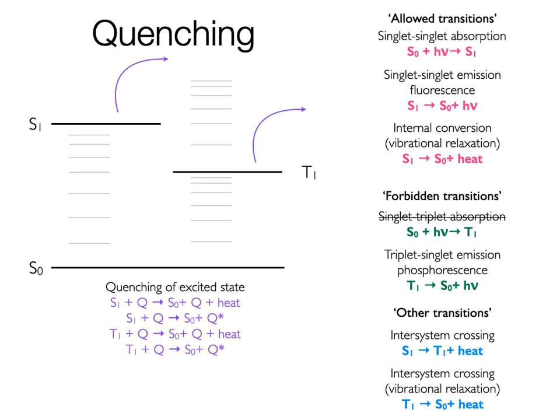We have electron transfer, which is covered in Marcus theory, and we have energy transfer, which I'm going to discuss here. So there are two different types of energy transfer which I'm going to discuss.